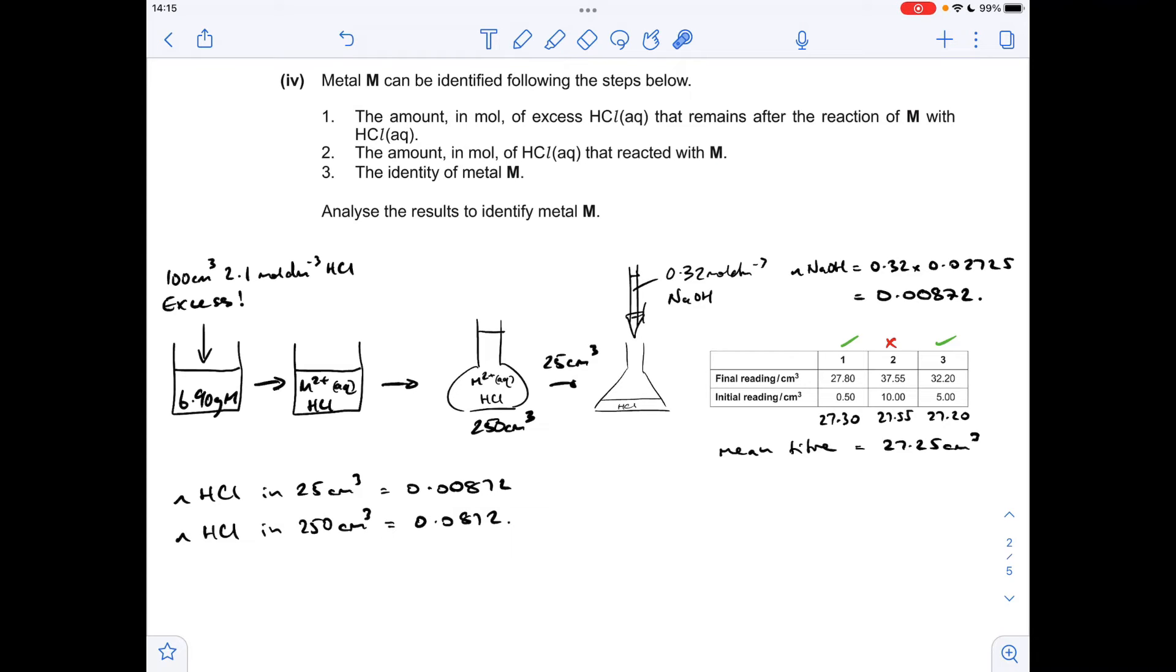Which means that the moles of HCl in this flask is going to be 10 times greater, so 0.0872 moles. Now remember that the moles of hydrochloric acid in this volumetric flask are the moles of hydrochloric acid that were left over when this reaction took place. So if we work out the moles of hydrochloric acid that we started with, we know that there was that many moles left over after the reaction in that beaker. We can work out how many moles of HCl had actually reacted with the metal.